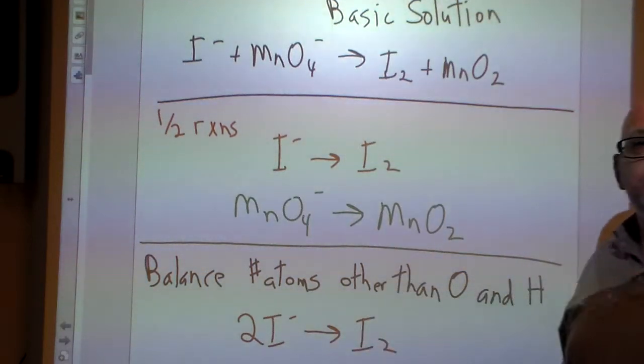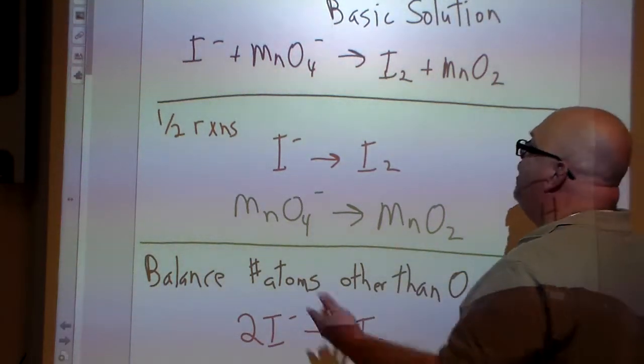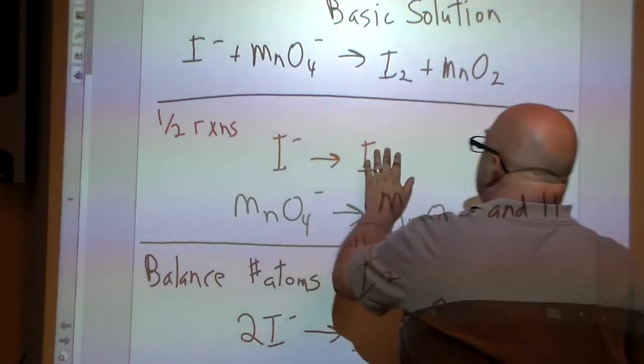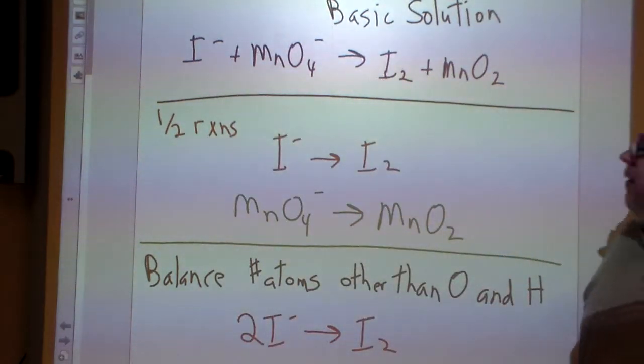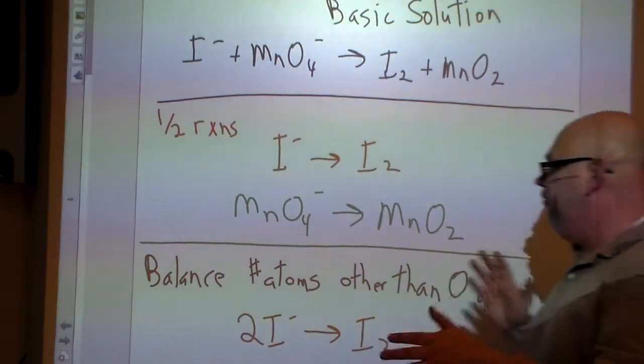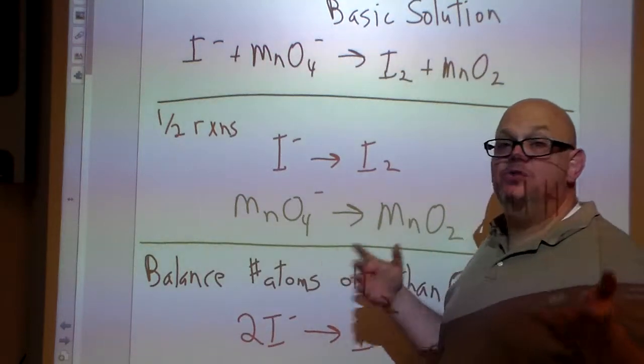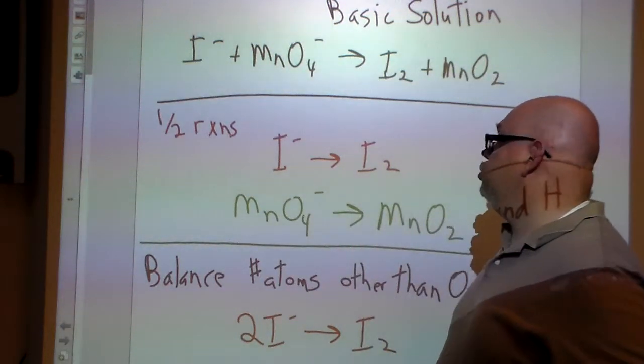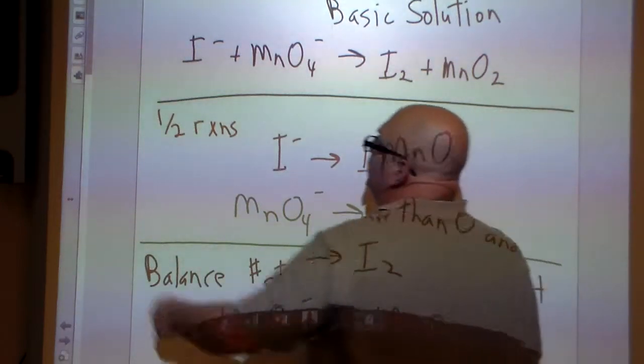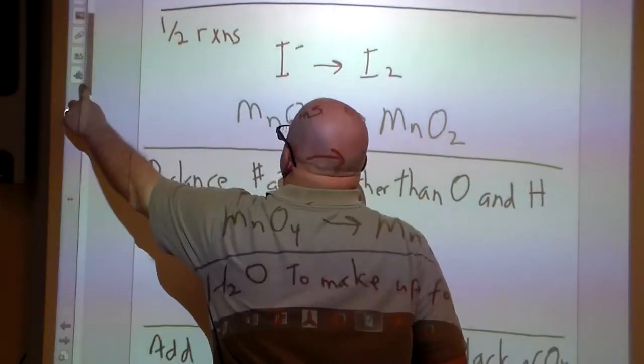So the first thing we want to do, just like we did for acidic, we break it down into half reactions. How are they connected to each other? So I minus to I2 and MnO4 minus to MnO2. Now I want to point something out about oxidation reduction because there's some differences here in the charges.